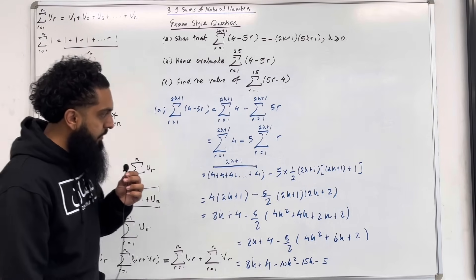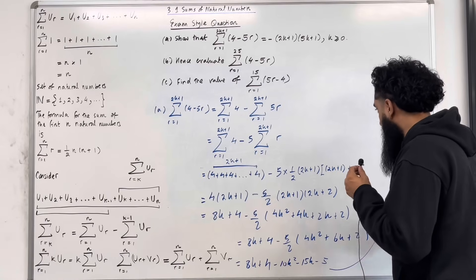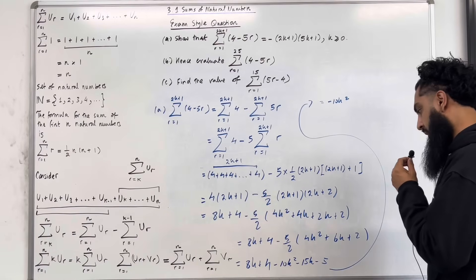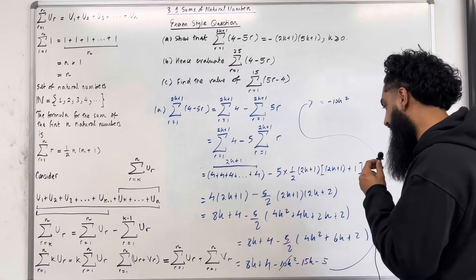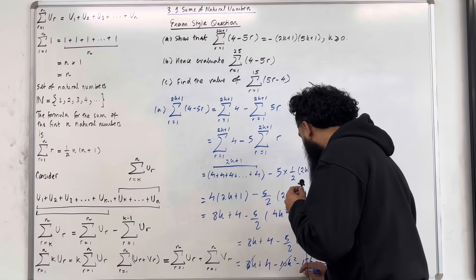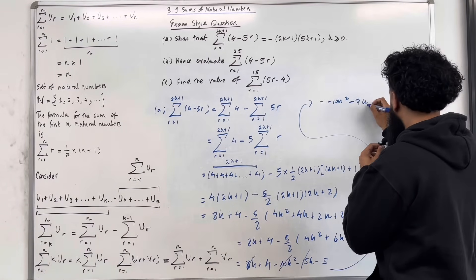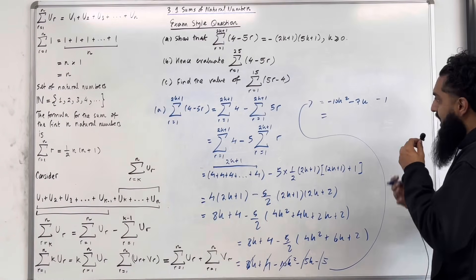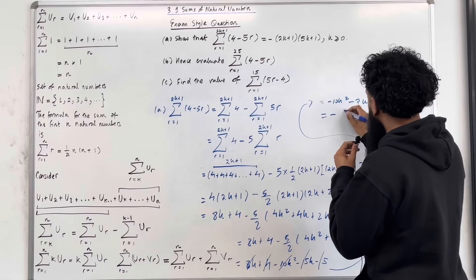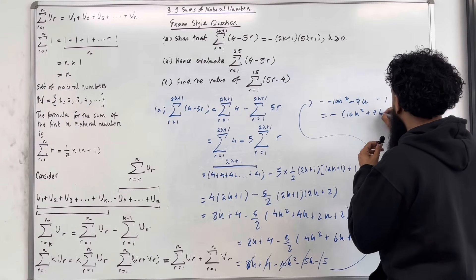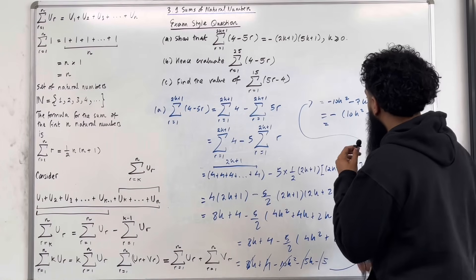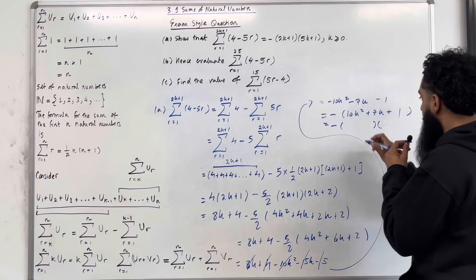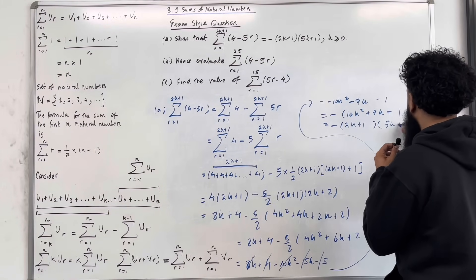Simplifying further: I've got minus 10K squared, then 8K minus 15K gives minus 7K, then 4 take away 5 gives minus 1. Taking out a factor of negative 1, I have minus 1 times 10K squared plus 7K plus 1. Factorizing into double brackets gives minus 1 times 2K plus 1 times 5K plus 1, as required. This completes part A of the exam-style question.